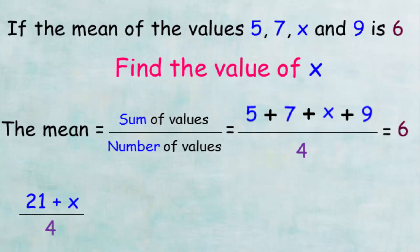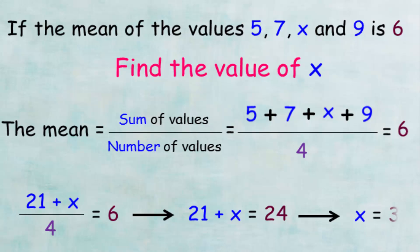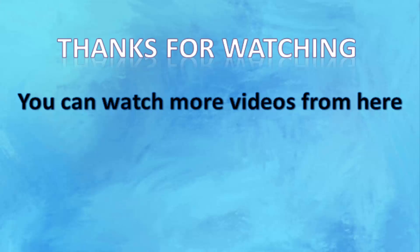Simplifying, we get (21 + x) / 4 = 6. Multiplying both sides by 4: 21 + x = 24. The number added to 21 to get 24 is 3, so x = 3. I hope the explanation was clear — don't forget to practice by doing the exercises for this section. Thanks for watching, see you next time!